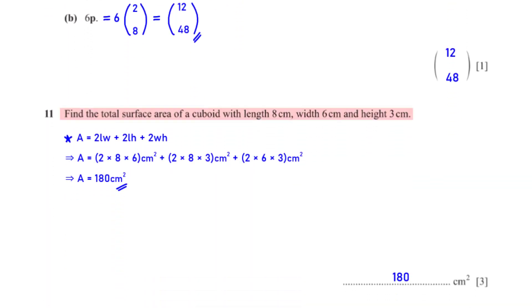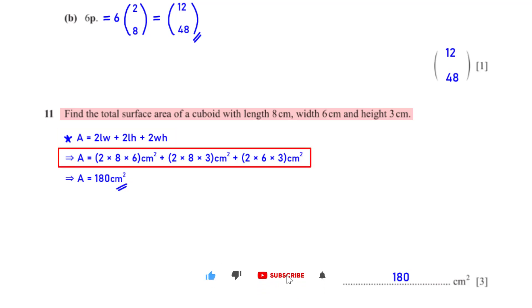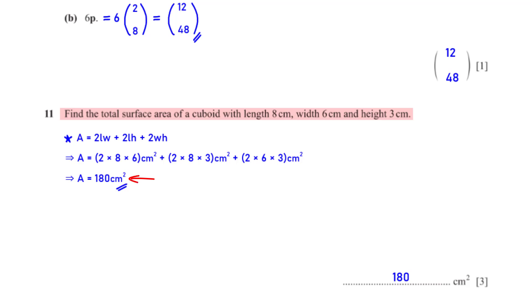Find the total surface area of a cuboid with length 8 cm, width 6 cm, and height 3 cm. Using the formula for the total surface area of a cuboid, with l = 8, w = 6, and h = 3, when we type this into the calculator we get 180 cm².